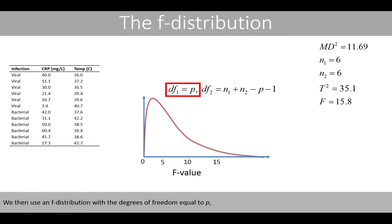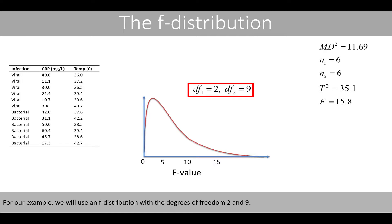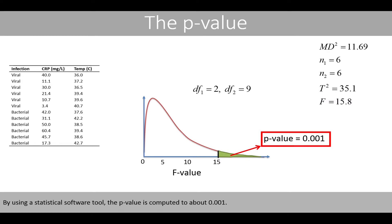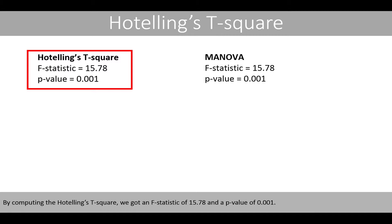We use an F-distribution with degrees of freedom equal to p and n1 plus n2 minus p minus 1. For our example, we use an F-distribution with degrees of freedom 2 and 9. The area at the right-hand side of 15.8 represents our p-value for the test. Using a statistical software tool, the p-value is computed to about 0.001. Since the p-value is less than the general significance level of 0.05, we can reject the null hypothesis that states that the mean CRP and mean body temperature are equal among patients with viral and bacterial infections. By computing the Hotelling's t-squared, we got an F-statistic of 15.78 and a p-value of 0.001.